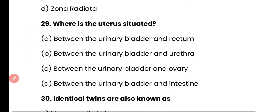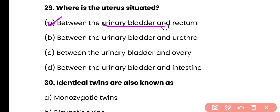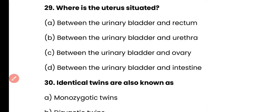Question 29: Where is the uterus situated? Options: between urinary bladder and rectum, between urinary bladder and urethra, between urinary bladder and ovary, or between urinary bladder and intestine? Correct answer is option A. The uterus is situated between the urinary bladder and rectum.